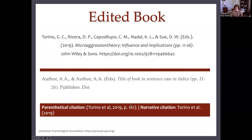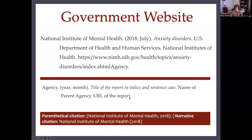For a government website — the National Institute of Mental Health — you have the agency name, then the year and month enclosed in parentheses, period. Then the title of the report — 'Anxiety disorders' — and the name of the parent organization or agency: U.S. Department of Health and Human Services, comma, National Institutes of Health, period. Then you give the URL of the report. And again, you have the parenthetical citation and narrative citation, very similar to what we've seen.